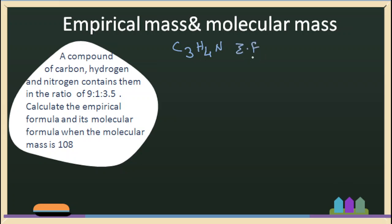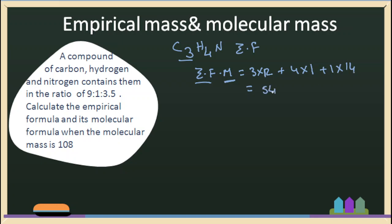Now, how do we calculate the molecular formula from this empirical formula? We calculate the empirical formula mass: 3 carbons — 3 times 12 — plus 4 hydrogens — 4 times 1 — plus 1 nitrogen — 1 times 14. That gives us 36 plus 4 plus 14, which equals 54 as the empirical formula mass. The molecular mass given in the problem is 108.